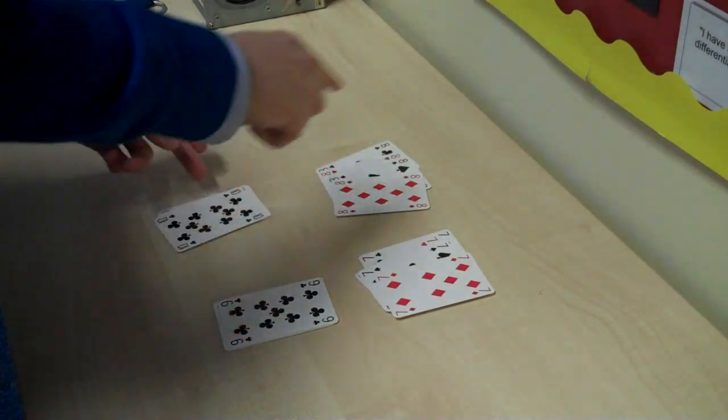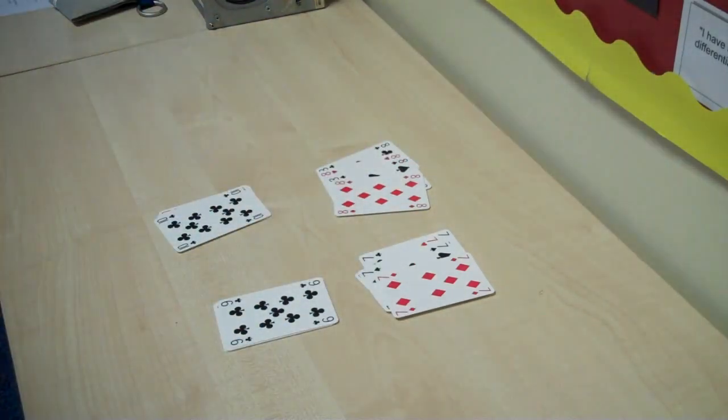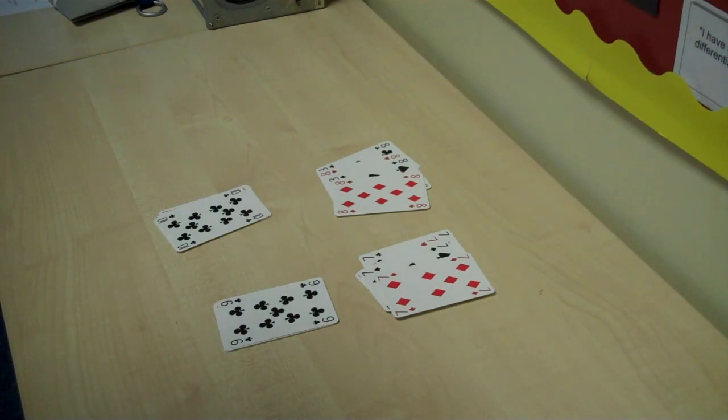Now, that whole repeat sequence where the children have got to go top left, top right, bottom left, bottom right. Again, at Key Stage 3, you can relate that to the idea of subroutines.